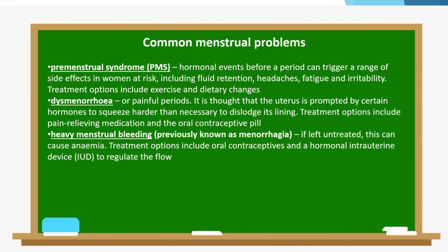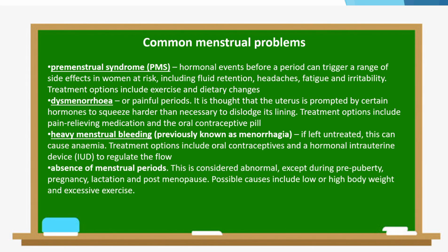Third, heavy menstrual bleeding — if left untreated, this can cause anemia; treatment options include oral contraceptives and a hormonal intrauterine device to regulate the flow. Last, absence of menstrual periods — this is considered abnormal except during pre-puberty, pregnancy, lactation, and post-menopause. Possible causes include low or high body weight and excessive exercise.